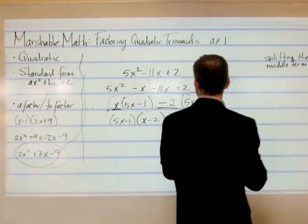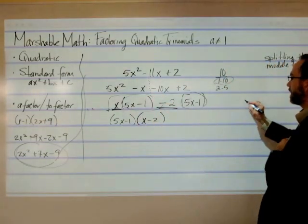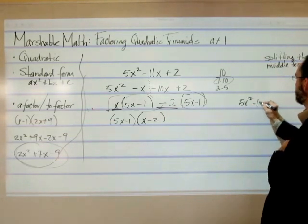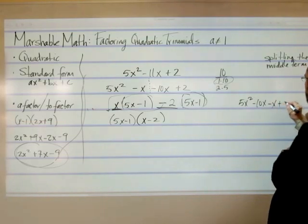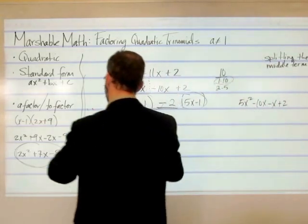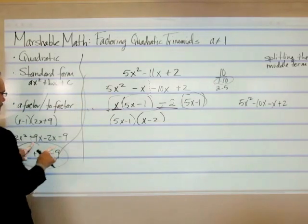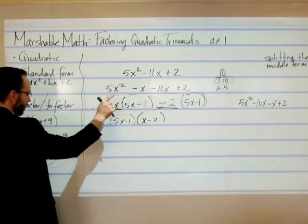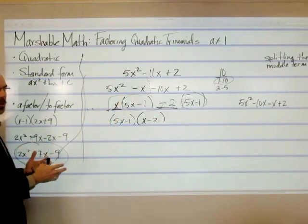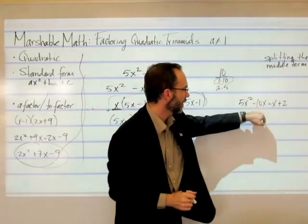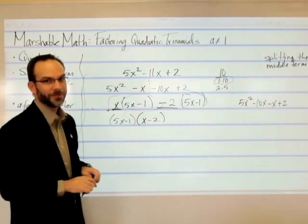There's a beauty in this method in that it doesn't matter which order you put these middle terms in. I could just as easily have written it as 5x squared minus 10x minus x plus 2. And remember on my original example, I had a negative 2 plus 9, but over here it was a plus 9 minus 2. So it doesn't matter which way you do it — you'll get the same thing.